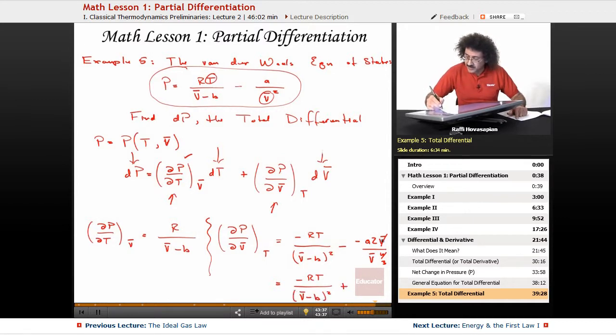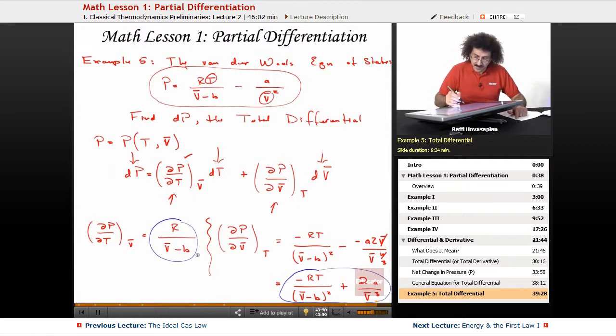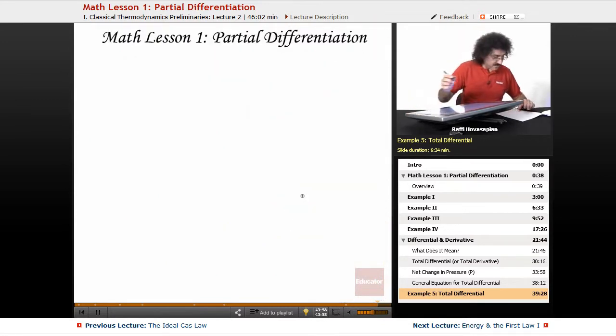The minus minus becomes a plus, and it becomes plus 2A over V cubed. Well, now that I have this and this, I plug them in to here and here. And I have my final expression.